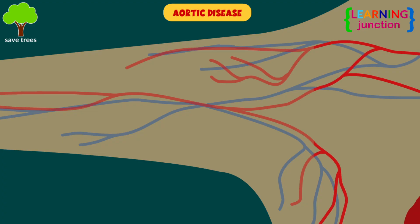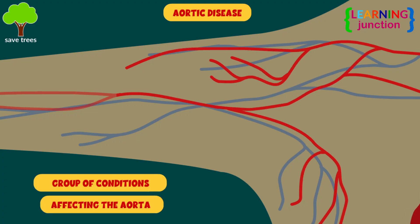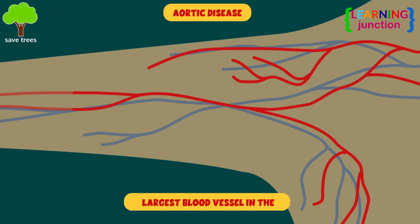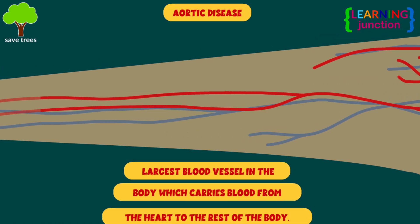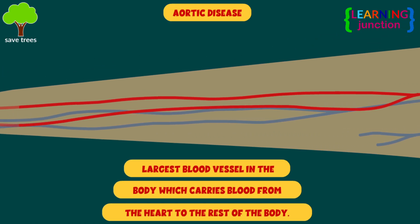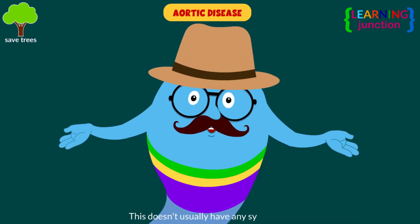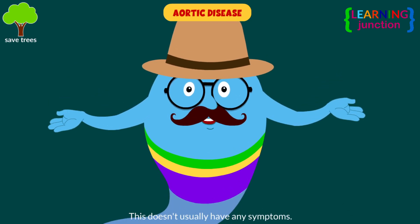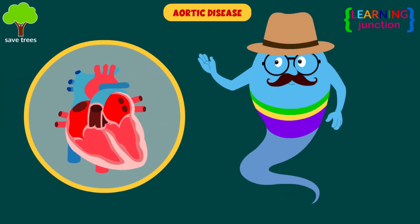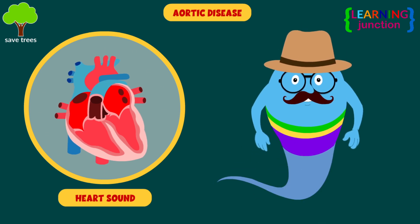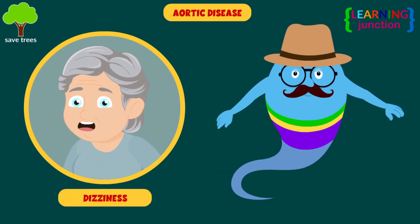Aortic disease. These are a group of conditions affecting the aorta, the largest blood vessel in the body, which carries blood from the heart to the rest of the body. This doesn't usually have any symptoms, but sometimes the person may experience a whooshing or swishing heart sound, tightness in the chest, and dizziness.